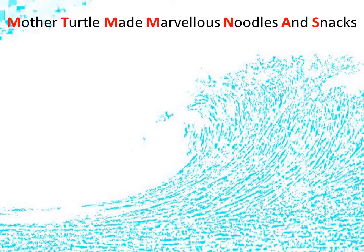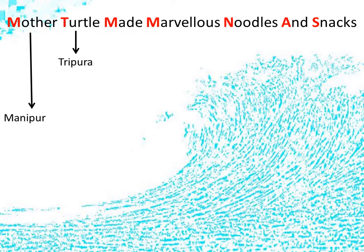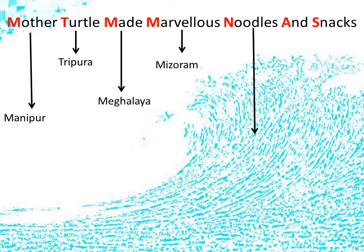Here's a small memory trick to remember the northeastern hill states. Assam is not included here as it comes under plains. The memory trick is: Mother Turtle Made Marvellous Noodles And Snacks. The first letter of each word stands for one of the states — M for Manipur, T for Tripura, M for Meghalaya, M for Mizoram, N for Nagaland, A for Arunachal Pradesh, and S for Sikkim.